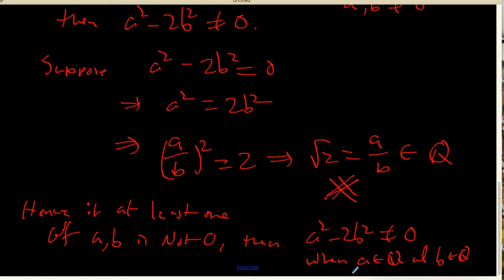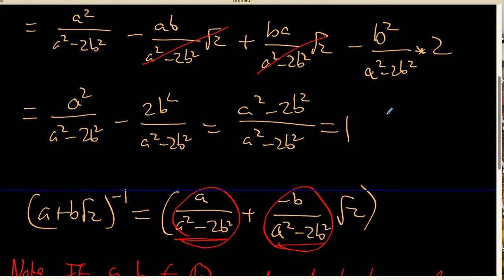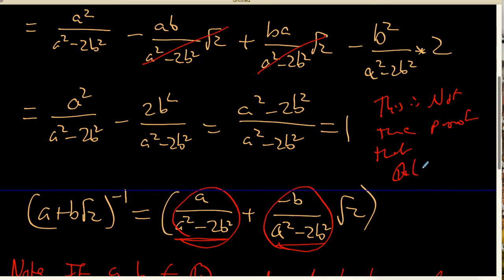Basically what the author has shown — or rather hinted at — is that we can always find a multiplicative inverse that will lie inside this set. But that's the last thing we need to do in showing something is a field. It's important to realize that what we've done here is not the proof that Q adjoin square root of 2 is a field. It is the last step of that proof.